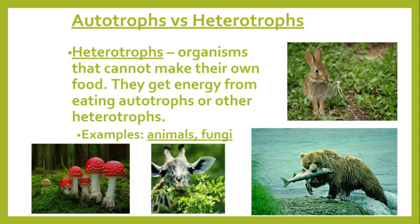A heterotroph is an organism that cannot make their own food. While us as humans make our own food — you make something for dinner — you are not doing that internally. You are relying on the chicken or the different vegetables that you eat. As a human, while you make your own food, you are not actually making it internally, so you are considered a heterotroph. If you need to hunt or rely on a different organism for your food, then you are considered a heterotroph.